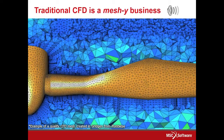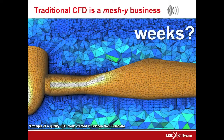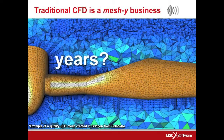Traditional CFD is all about the mesh. Your solution quality, or even ability to get a solution, is greatly dependent on your ability to create a quality mesh with the right number of boundary layer elements and mesh refinement in the areas that count. How long does it take your engineers to create a valid CFD mesh? One day? Two days? Weeks? How long does it take an engineer to develop the expertise to know what even makes a good mesh? How often do CAD designers offer up clean, simplified geometry that makes the meshing process fast and easy?